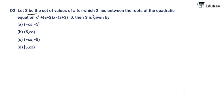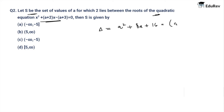Let's move to the second question. Let S be the set of values for a for which 2 lies between the roots of the given quadratic equation. If I take the discriminant, delta equals a² + 8a + 16, which equals (a + 4)². Hence the roots of the equation are always real, and the parabola opens upward since the coefficient of x² is positive, that is 1.